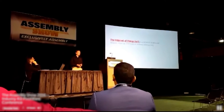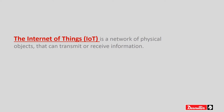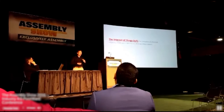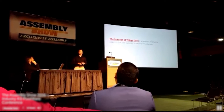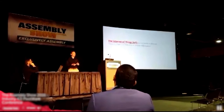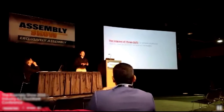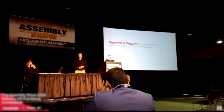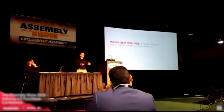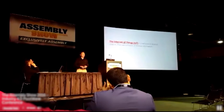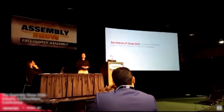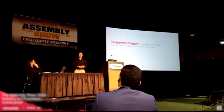By definition, the Internet of Things is a network of physical objects that can transmit or receive information. At a more rapid pace than ever before, these devices are being introduced to our manufacturing environment — whether it be test stations, robotics, or automation cells. All of these different devices are producing information that has very significant value to us.